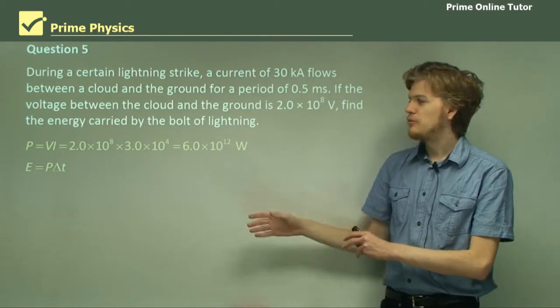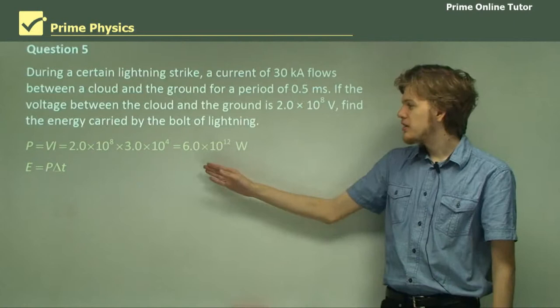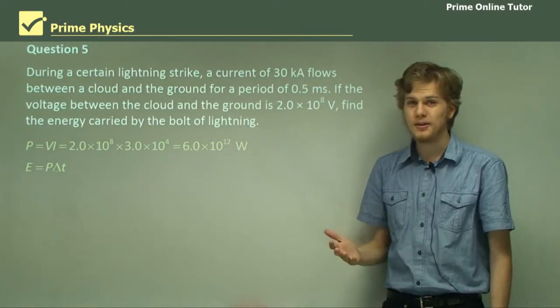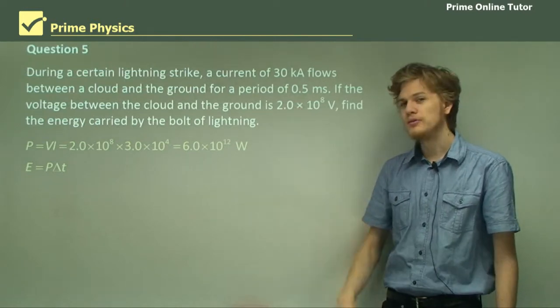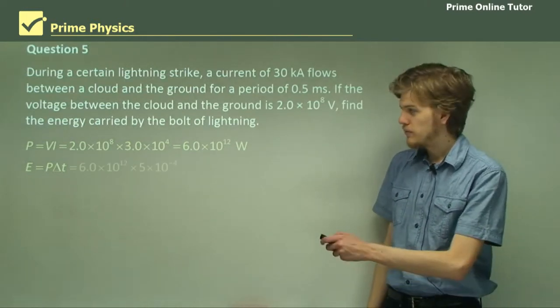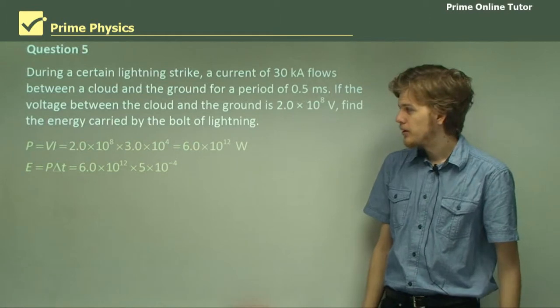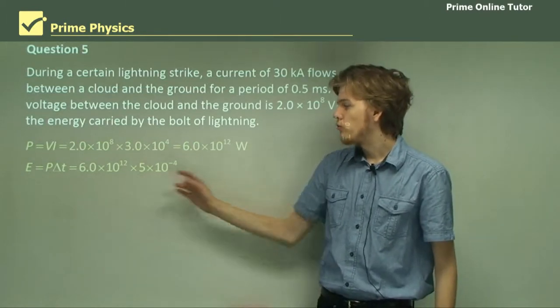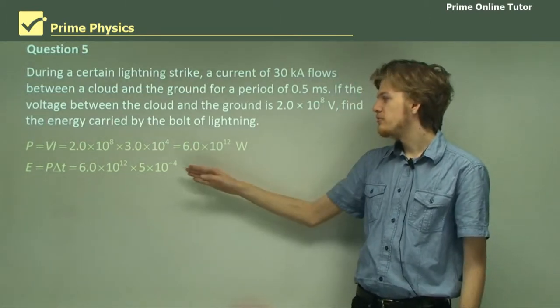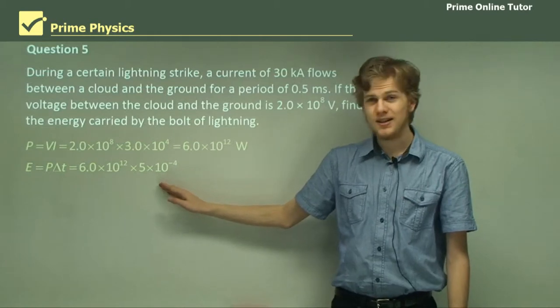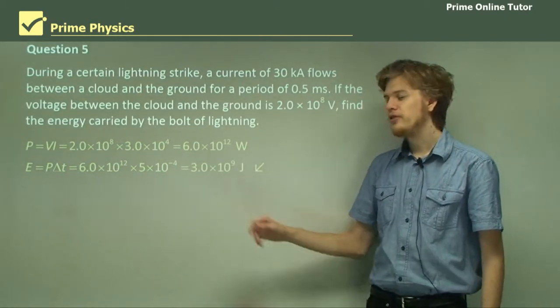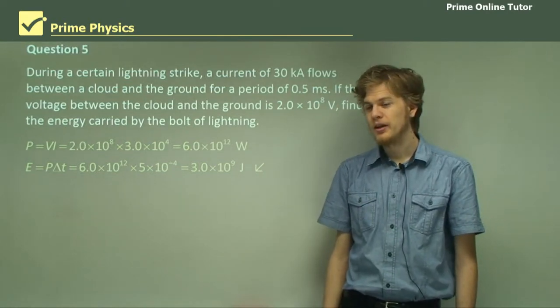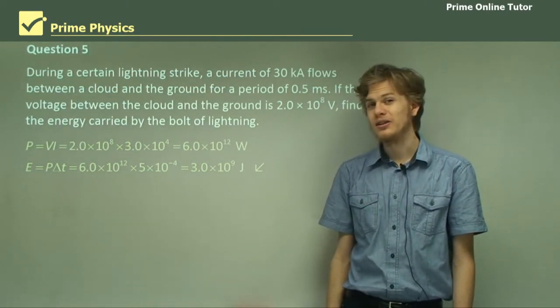So, 6 times 10 to the 12 watts is 6 times 10 to the 12 joules per second. But we don't have a whole second. We only have a two thousandth of a second. So, substituting this in, 6 times 10 to the 12 watts times 5 times 10 to the minus 4 seconds gives us an answer of 3 times 10 to the 9 joules. Which is still an enormously large number.